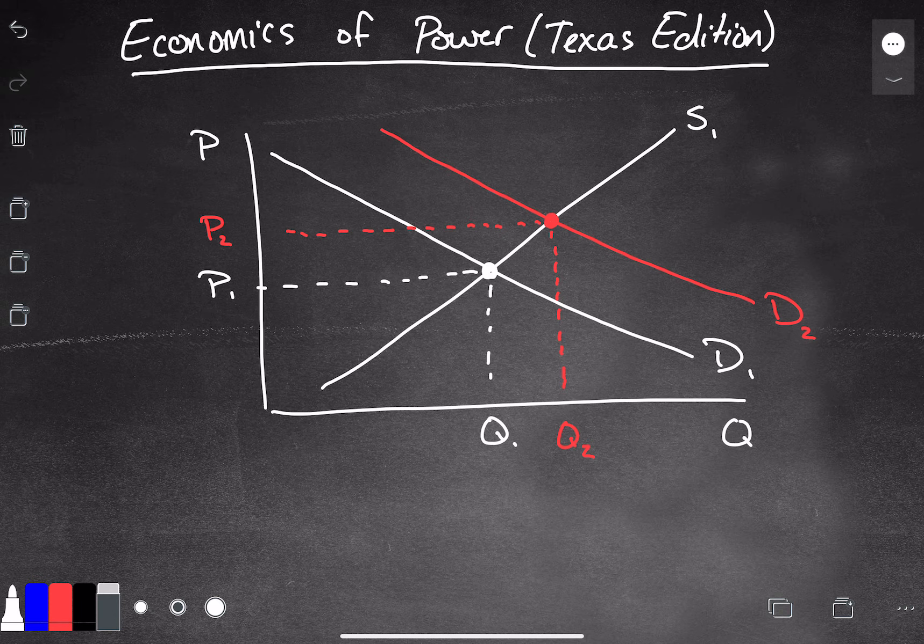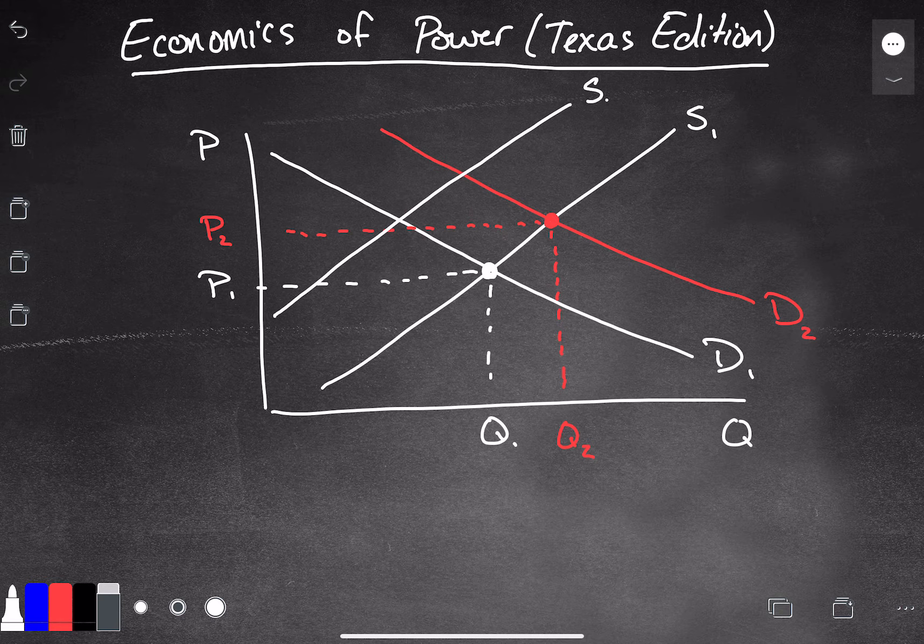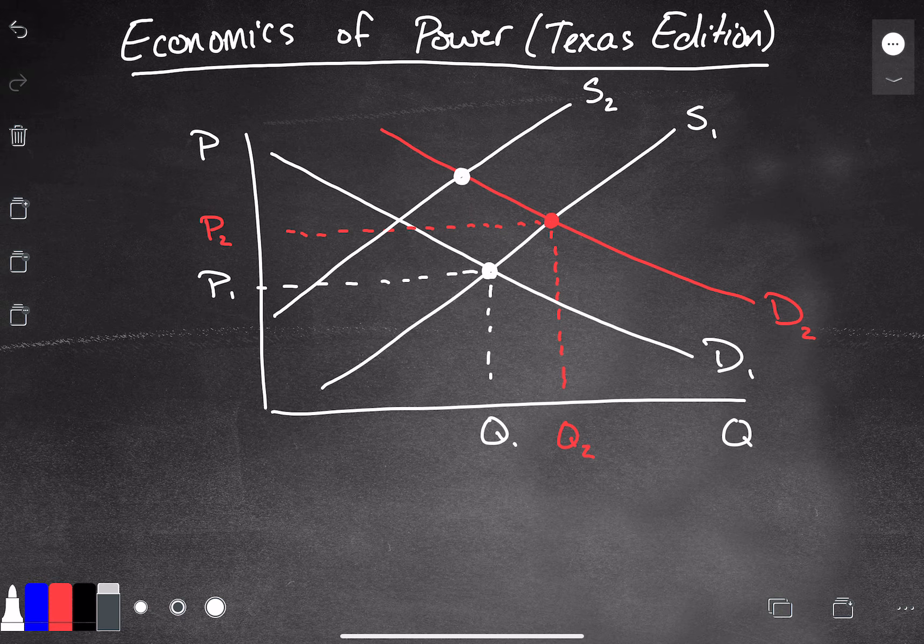Well, that's an easy thing to show. We simply shift the supply curve to the left. So now the producers are less able to produce power, and we have a new equilibrium point here.